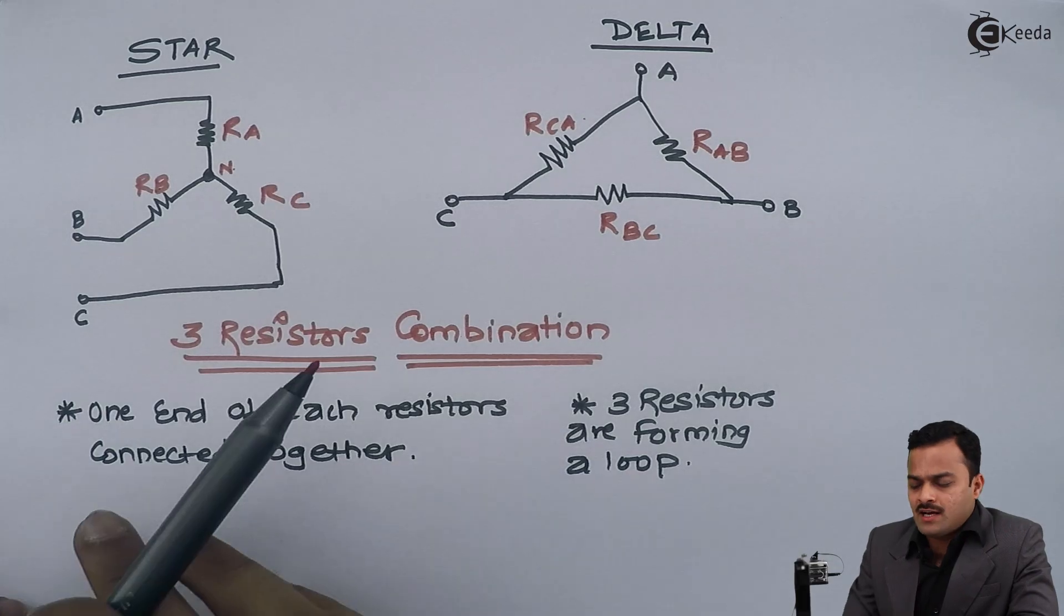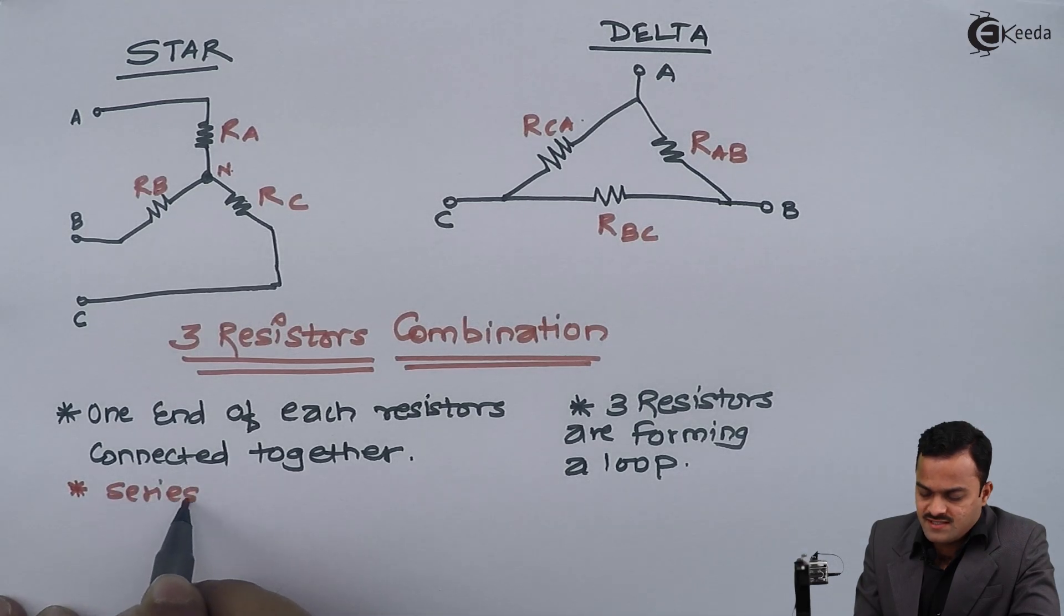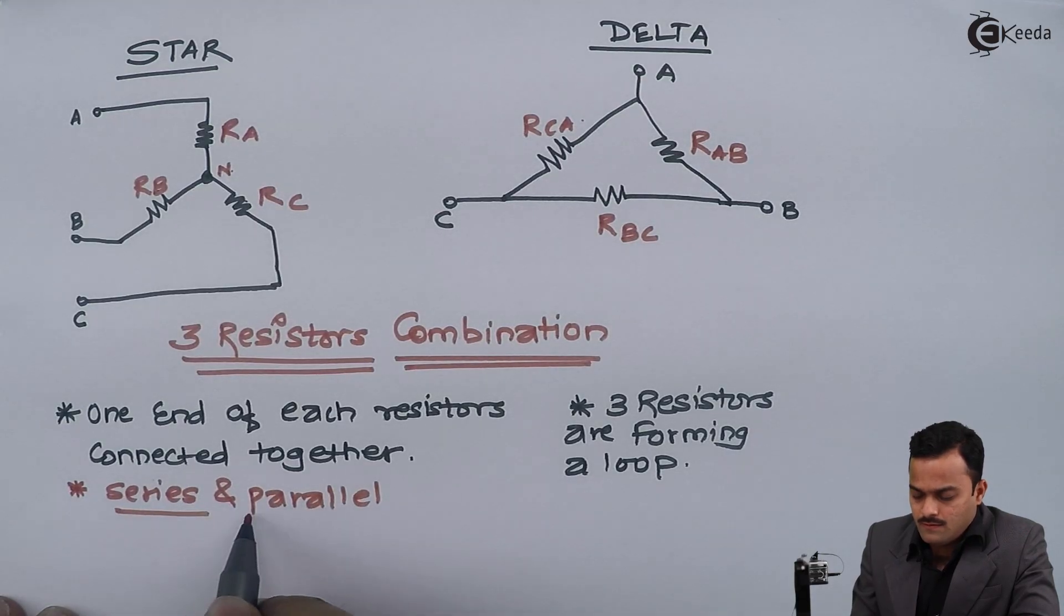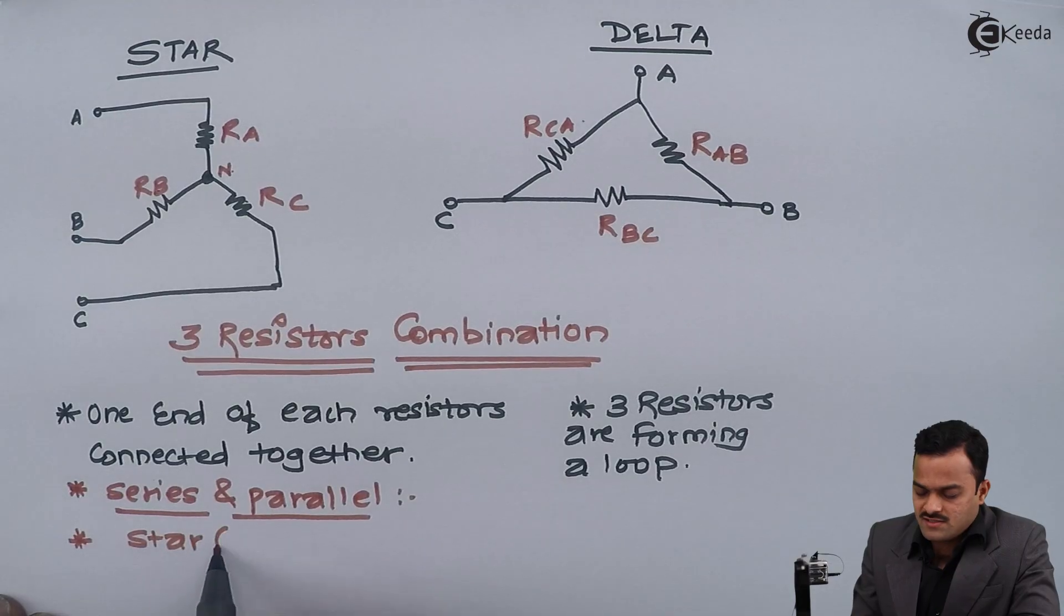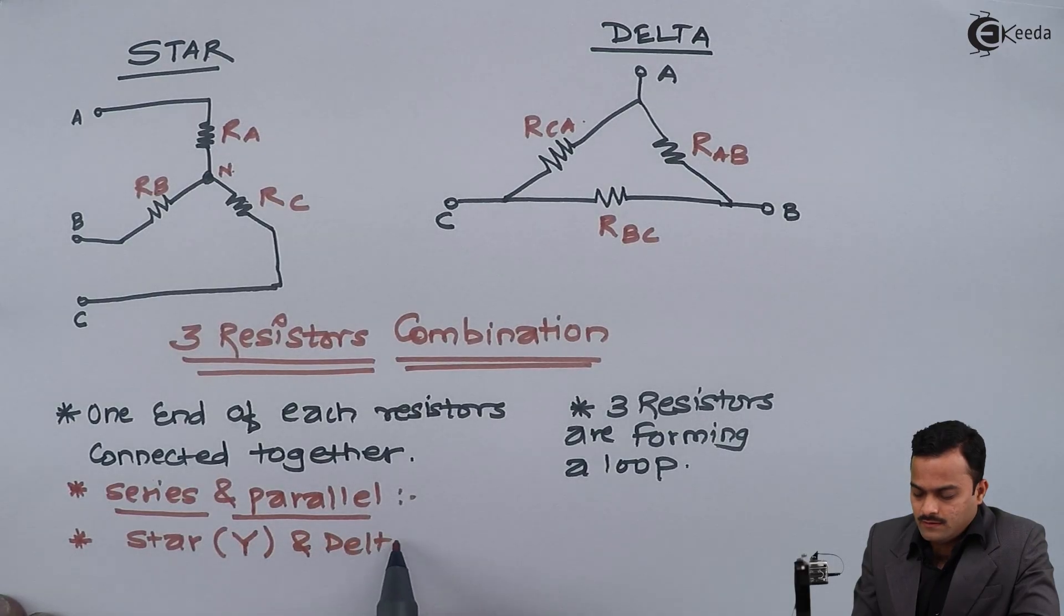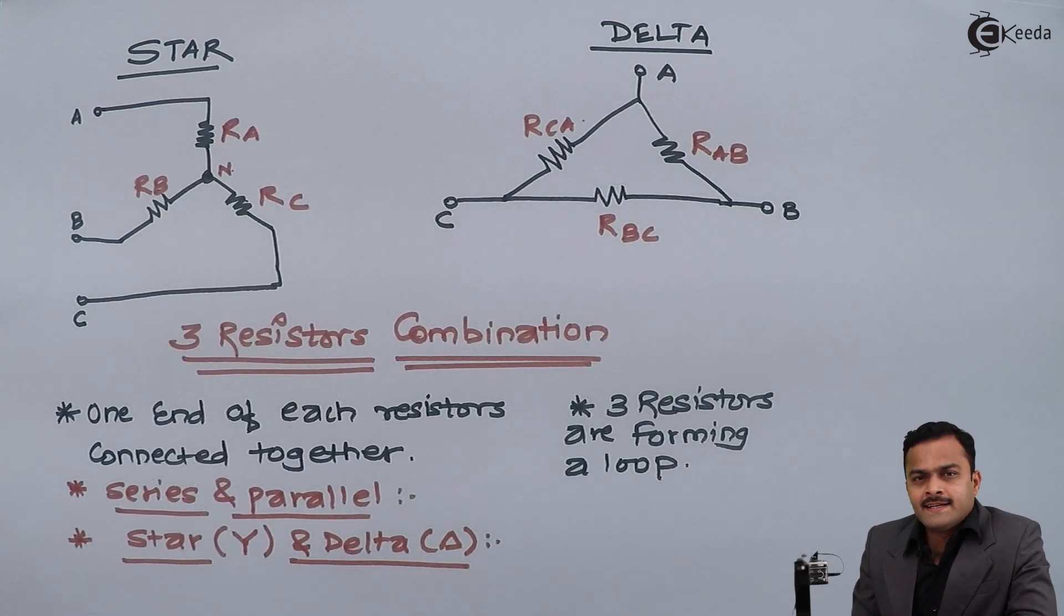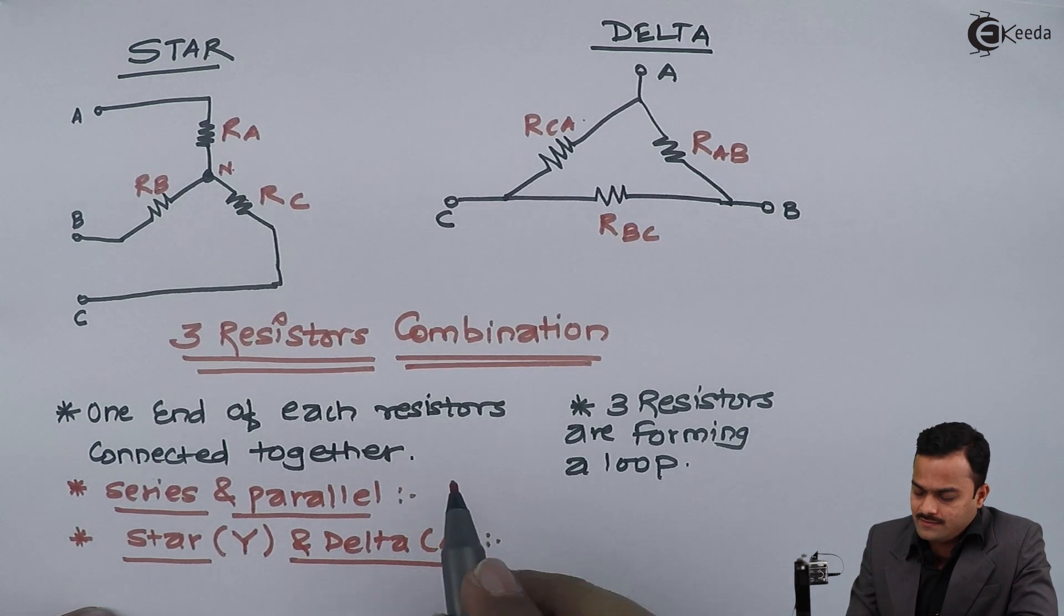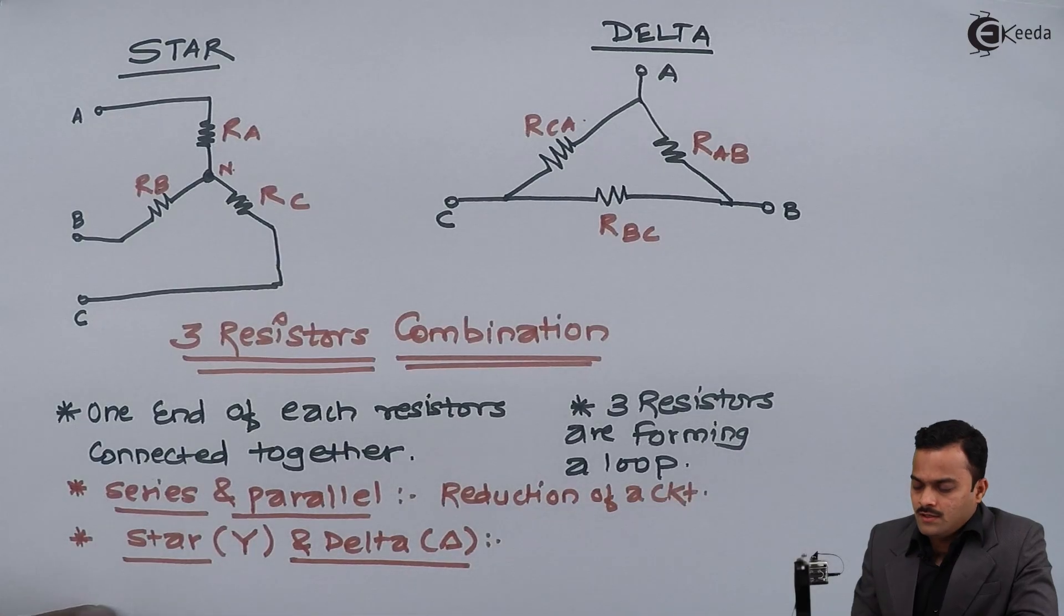What is the advantage of star and delta? We have seen series and parallel combination, and now we are seeing star which can also be represented like this, and delta which you can represent it like this. Series and parallel combinations always reduce the circuit. So the advantage of series and parallel is reduction of a circuit.